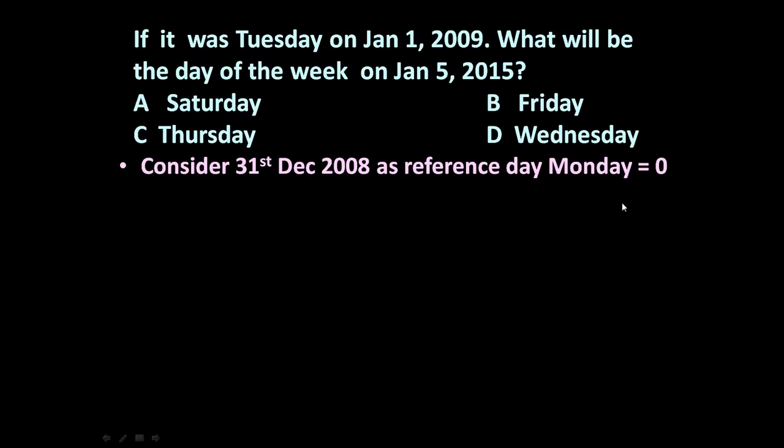Now let us determine number of odd days up to 2015. Here it is 5th January 2015 and it is 1st January 2009. So complete year 2009, complete year 10, 11, 12, 13, 14, and few days of 15.